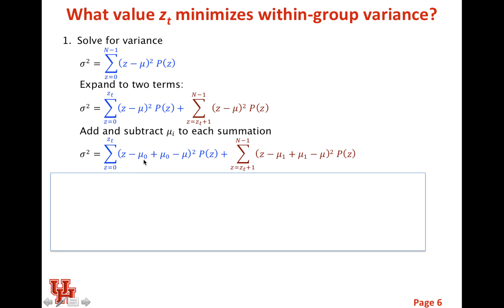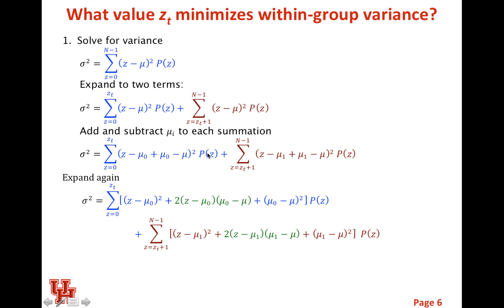What we can do is we can add and subtract to each of these μi terms. So we can add and subtract μ0 plus minus μ0 plus μ0, and the second term we can subtract off μ1 and add μ1. This does nothing to change. We've added and subtracted the same thing in each one. Then we can take these squares and multiply them out.